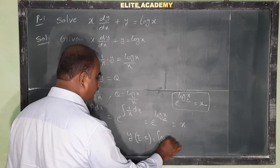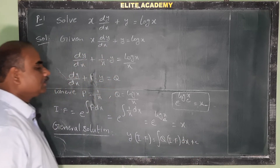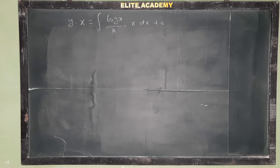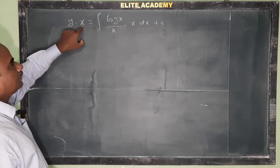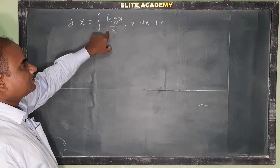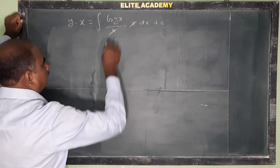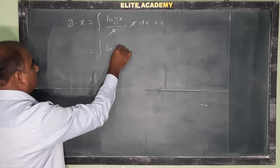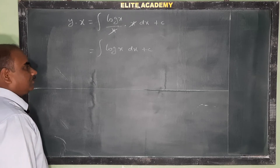This is the general solution. y into integrating factor x is equal to integral of Q, which is log x by x, into integrating factor x dx plus c. The x terms cancel on the right side, giving integral of log x dx plus c.